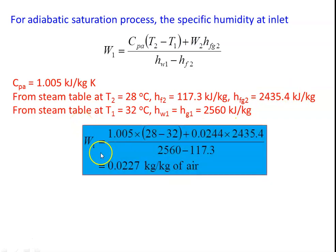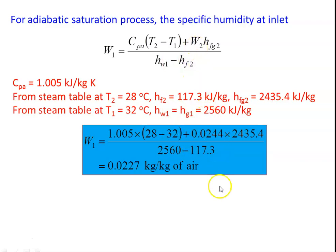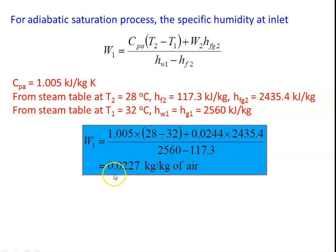Substituting: W1 = 1.005 × (28 − 32) + 0.0244 × 2435.4, divided by (2560 − 117.3). That gives W1 = specific humidity at the inlet = 0.0227 kg per kg of air.